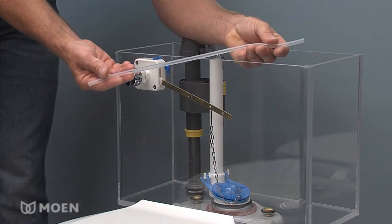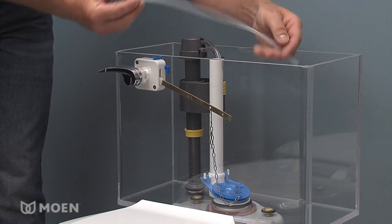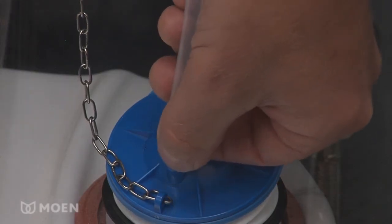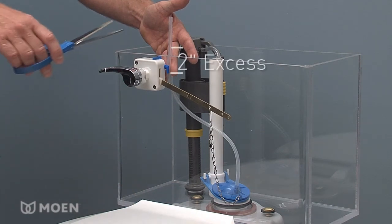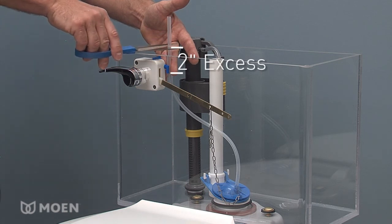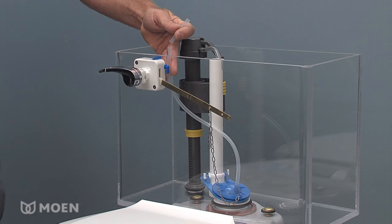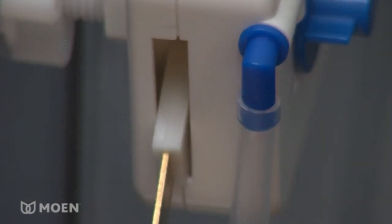The air tube is used to control the speed at which the flapper closes, regulating the water used for each flush. Attach one end to the top of the flapper. Bring the air tube up to the blue 90 degree elbow on the control box. If the air tube extends more than 2 inches past the 90 degree elbow, cut the remaining air tube beyond the 2 inch allowable excess. Attach the other end of the tube to the blue 90 degree elbow at the top of the control box.